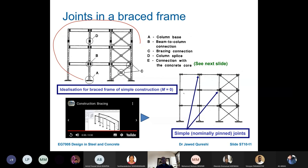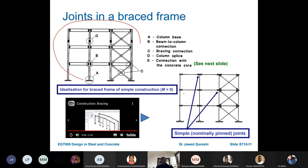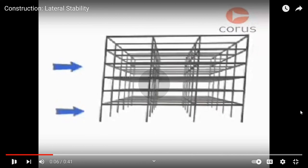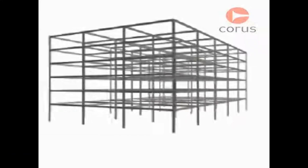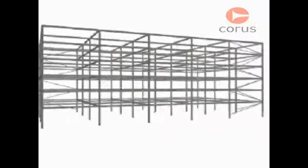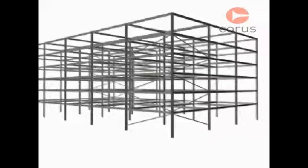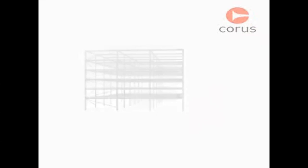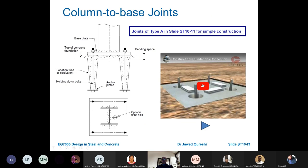Braced frames are idealized as simple construction, meaning joints are nominally pinned and moments are not transferred. For shear wall or multi-story construction, horizontal wind forces can be very onerous. Options include braced frames with diagonal bracing restricted to core areas containing stairwells, lifts, and toilets, as well as reinforced concrete cores where cast in-situ concrete forms the core, and structural steelwork transfers loads to it.